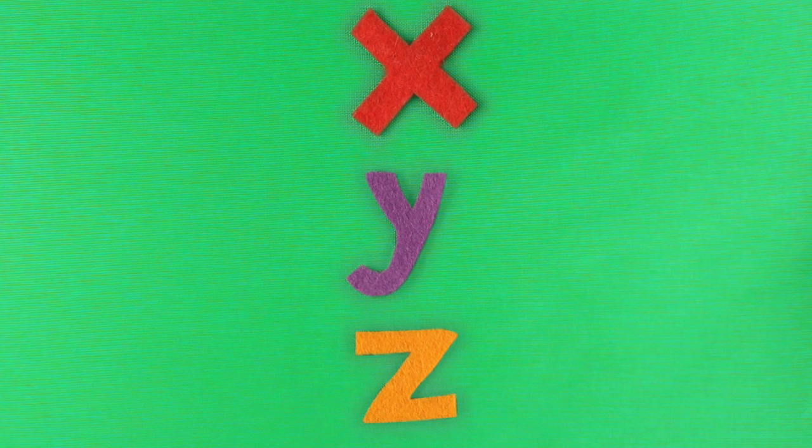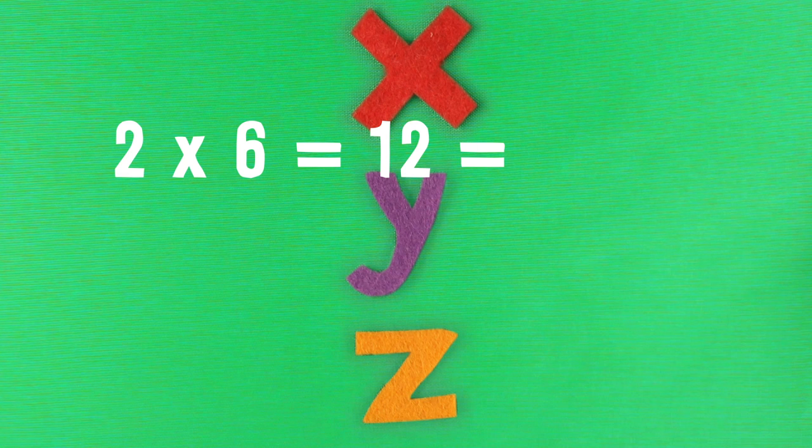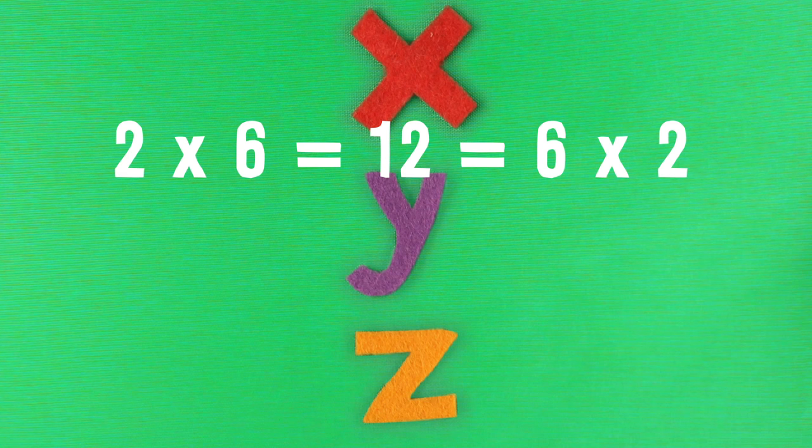Take two regular numbers, say 2 and 6, and multiply them. 2 times 6 is 12, which is the same as 6 times 2. The order of the numbers doesn't matter when you multiply. Or, as a mathematician would say, multiplication of natural numbers is commutative.